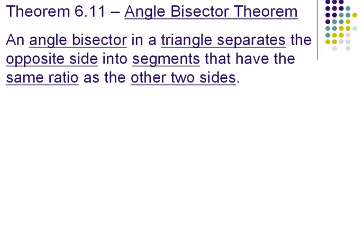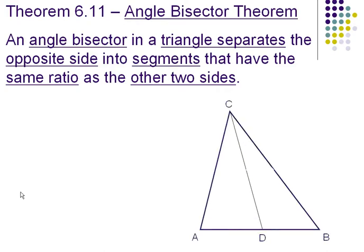Theorem 6.11, the angle bisector theorem. An angle bisector in a triangle separates the opposite sides into segments that have the same ratio as the other two sides. Okay, so here we have a picture of triangle ACB with angle bisector CD. And according to the theorem, the ratio of AD to DB is the same as AC to BC. See how the sides that are divided up, they correspond and are proportional with the other sides of the triangle.